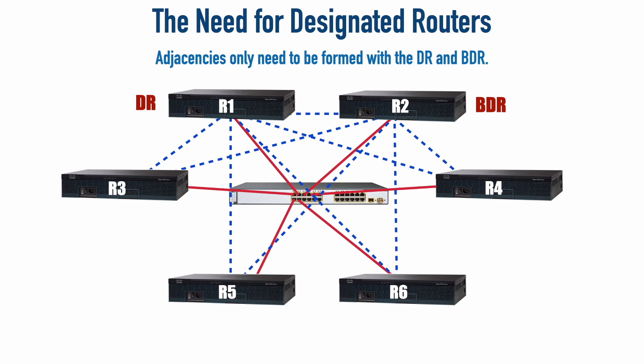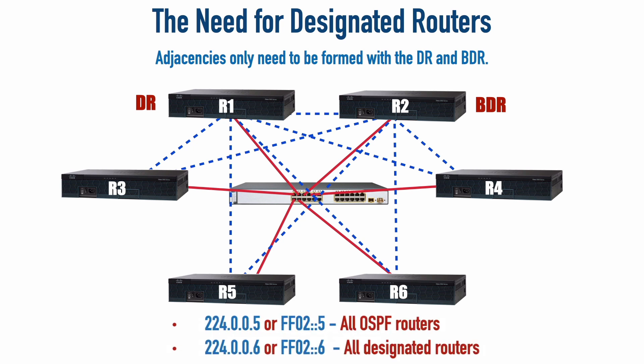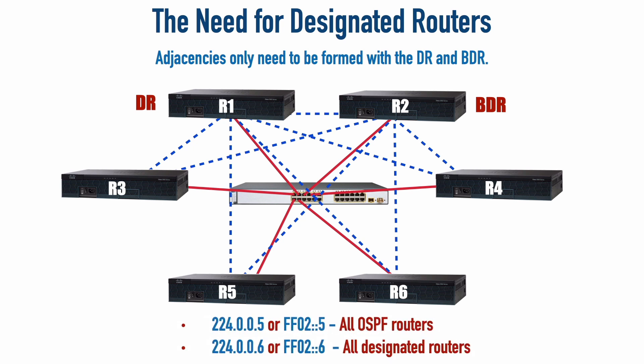The multicast address for routers to say hello to one another with OSPF is 224.0.0.5 for IPv4, and FF02::5 for IPv6. For communicating route updates specifically with DRs and BDRs, a different multicast address is used: 224.0.0.6 for IPv4, and FF02::6 for IPv6. That address goes to all designated routers, which includes the backup designated router.